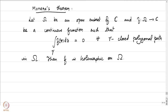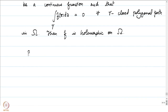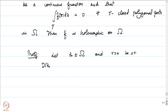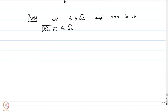A moment's thought shows that since holomorphicity is a local property, we focus at a point z₀. If ω is connected, the second fundamental theorem of calculus gives an antiderivative. Let z₀ be some point in ω and r > 0 be such that D̄(z₀, r) ⊂ ω; we focus our attention entirely on D(z₀, r).